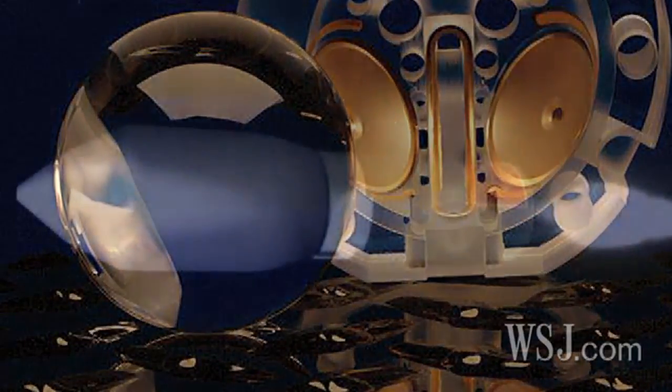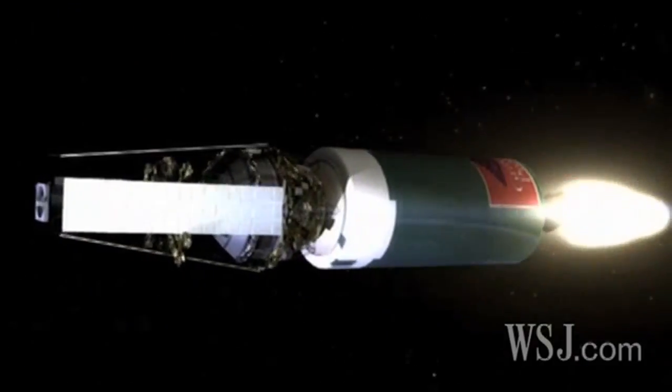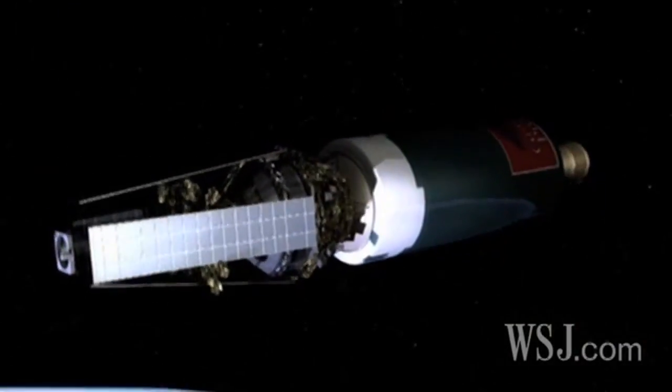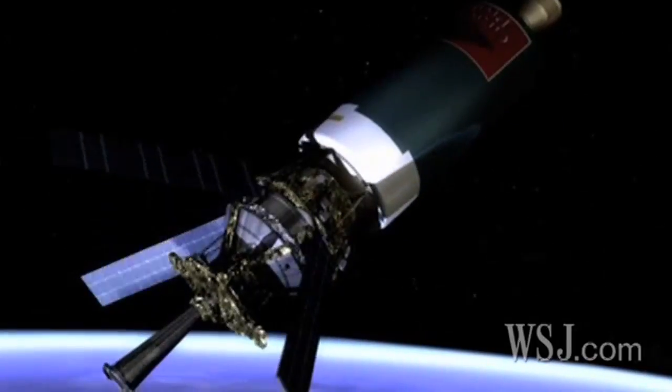Once in orbit, the gyroscopes were designed to keep the Gravity Probe B satellite perfectly aligned with the distant guide star in the constellation Pegasus.